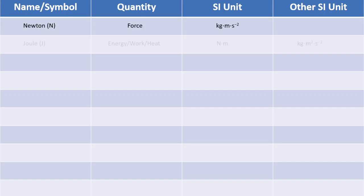The first SI-derived unit is the newton, denoted by big N, which is the derived unit for force. One newton is the force required to give a one-kilogram object an acceleration of one meter per second squared. Next is the joule, denoted by uppercase J, which is associated with energy and work — and also heat, though energy and work are more common. One joule is the energy transferred or work done over a distance of one meter, which is why its SI unit is newton-meters.